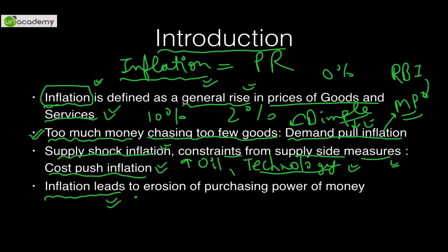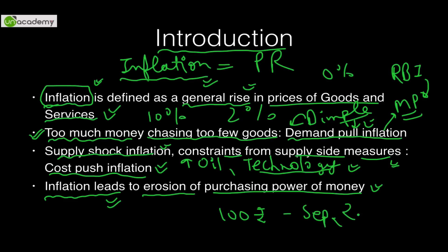The general statement you should know and write in essays and Paper 3 answers is that inflation leads to erosion of purchasing power of money. This is why 100 rupees in September 2015 is less than 100 rupees in October 2015 — even in one month the power of money decreases because of inflation.